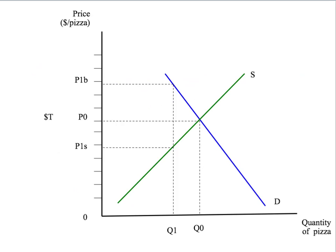The sales tax puts a wedge between the price buyers pay and the price that sellers receive. We've illustrated this on our demand and supply diagram using the wedge approach — looking for a price to buyers that is exactly T dollars above the price that sellers receive. We look for a situation where, given the price buyers pay, the amount they want to buy, Q1, given by the demand curve, is the same as the amount sellers wish to sell, Q1, given the price sellers receive, P1S. Buyers want to buy Q1, sellers want to sell Q1 — they match, so we're in equilibrium.